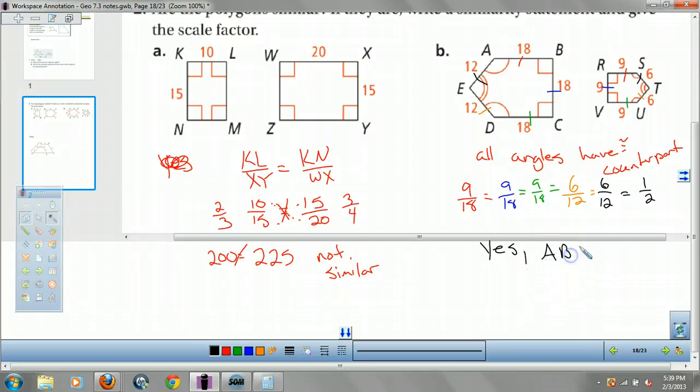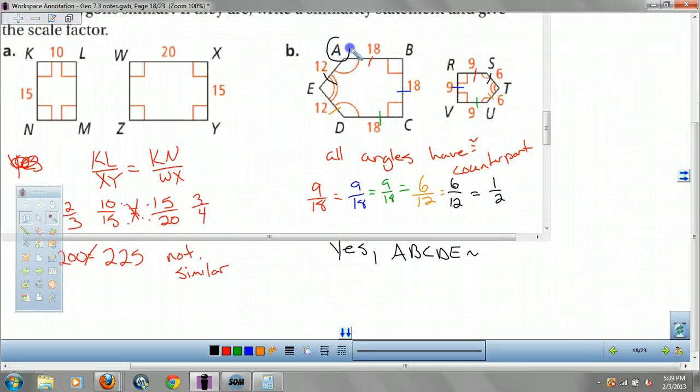Now, I'm going to put A, B, C, D, E similar to. Now, I started with A. That means, over here, I'm going to start with S. And, I want A to B. So, I have to go S to R. This one, you're going to want to go R, S, T. But, that doesn't work. They have to match up, guys. A matches up with S. So, I start with S. S to R. R to V. And, V matches up with C. V to U. U to T.